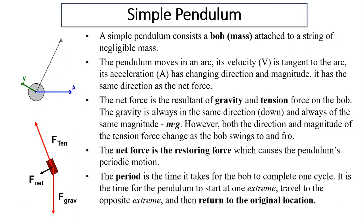What's a simple pendulum? A simple pendulum consists of a bob, that means the mass, attached to a string of negligible mass. This string cannot stretch either, so all the mass is on the bob.